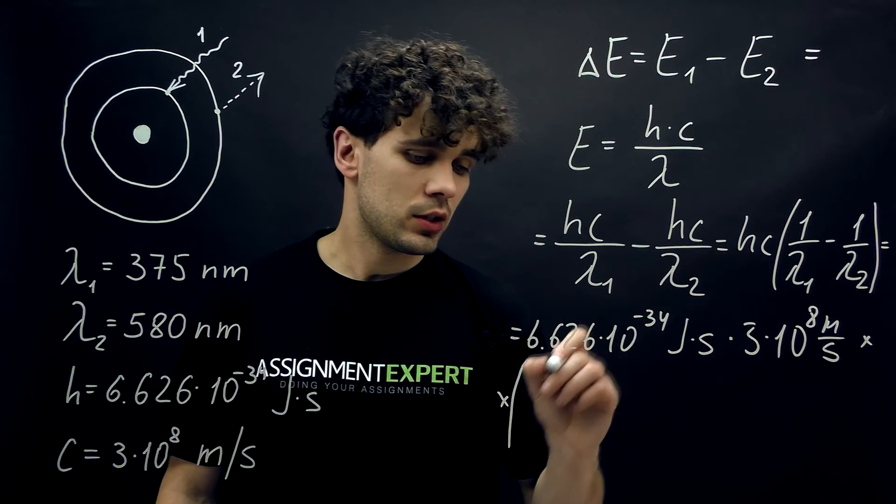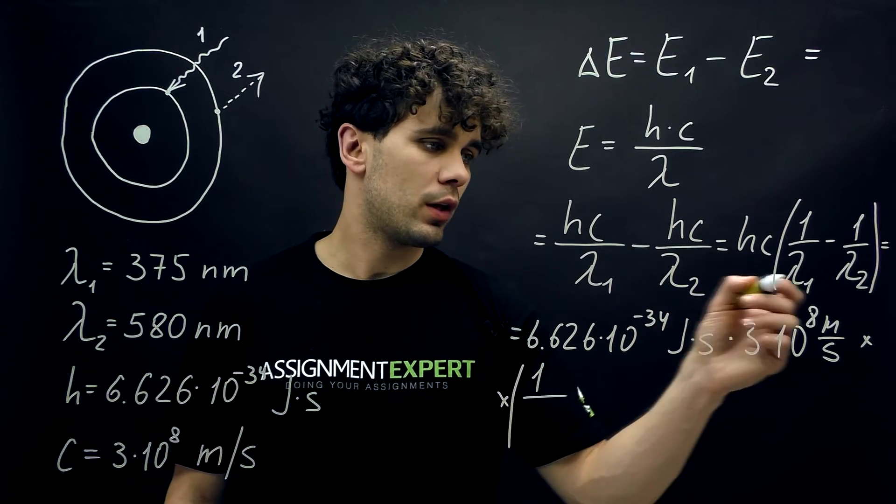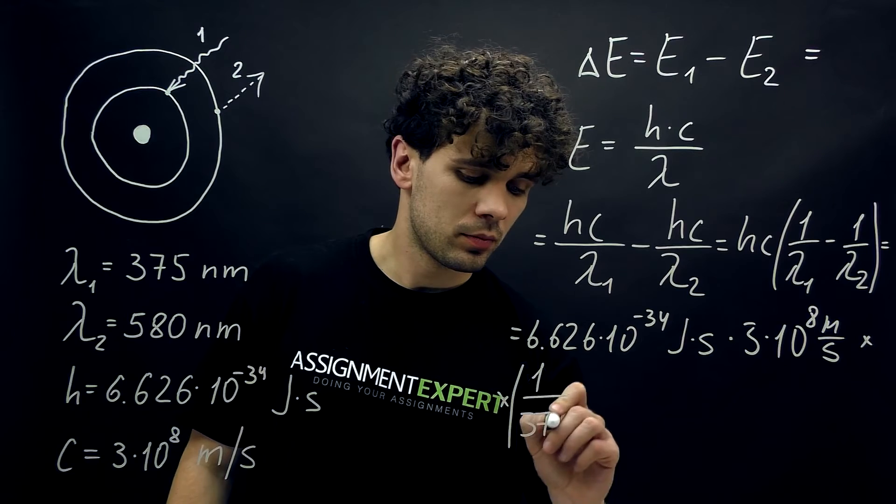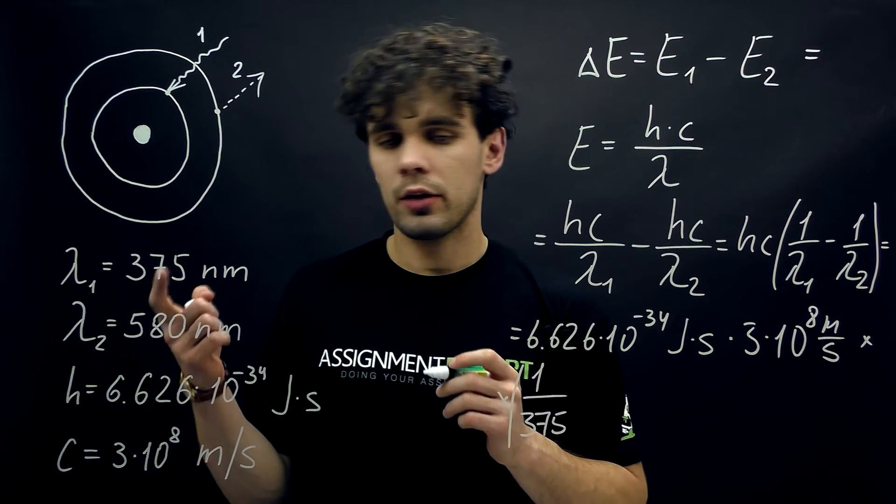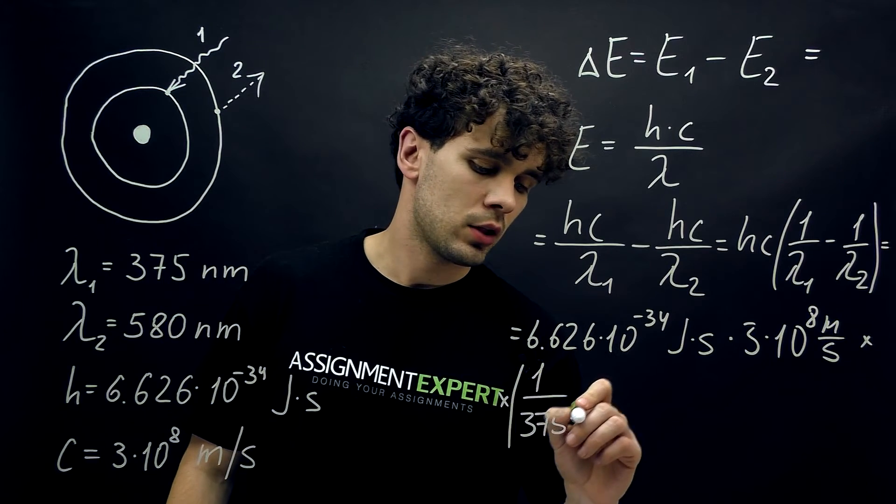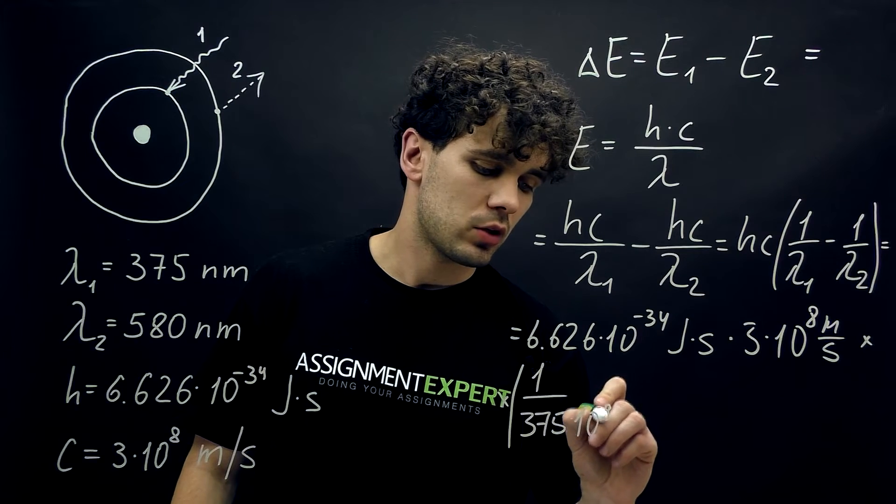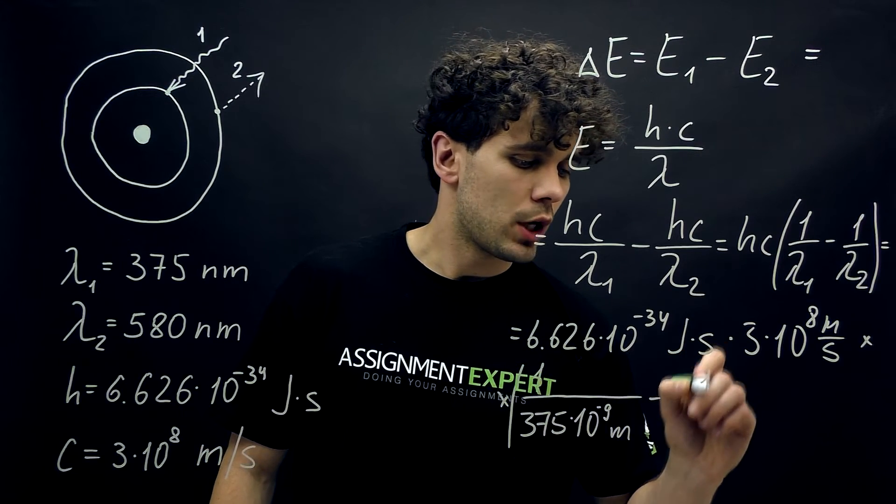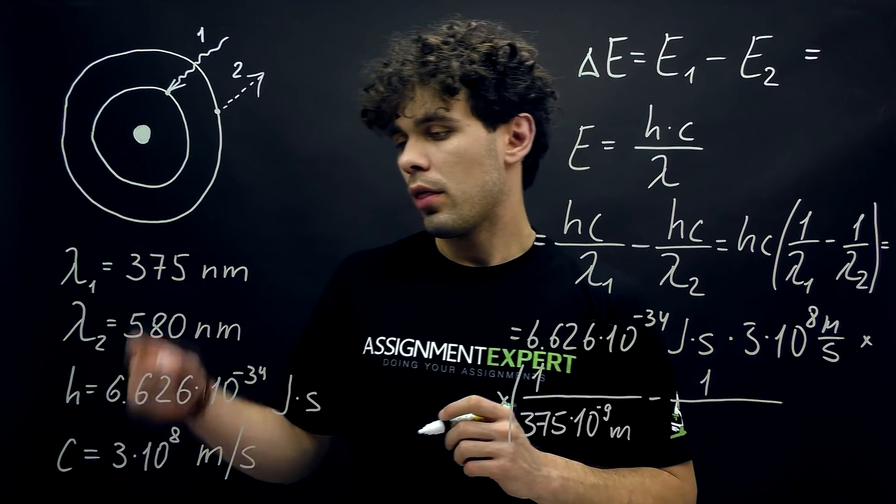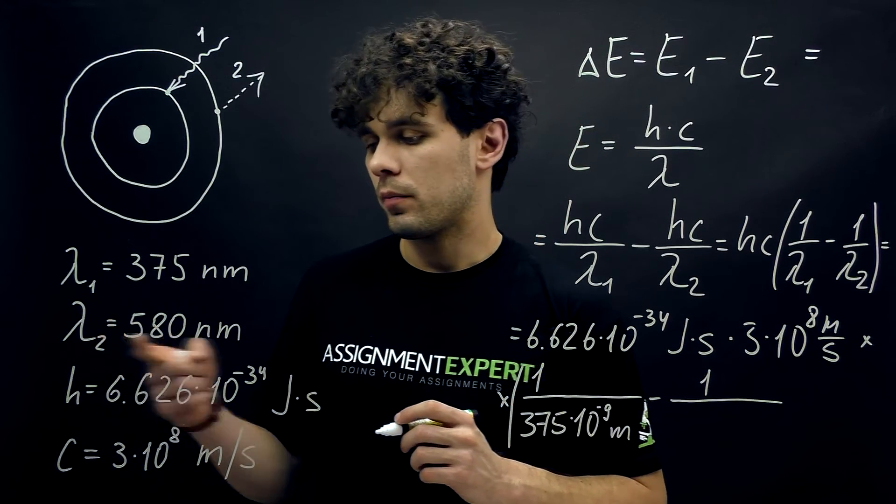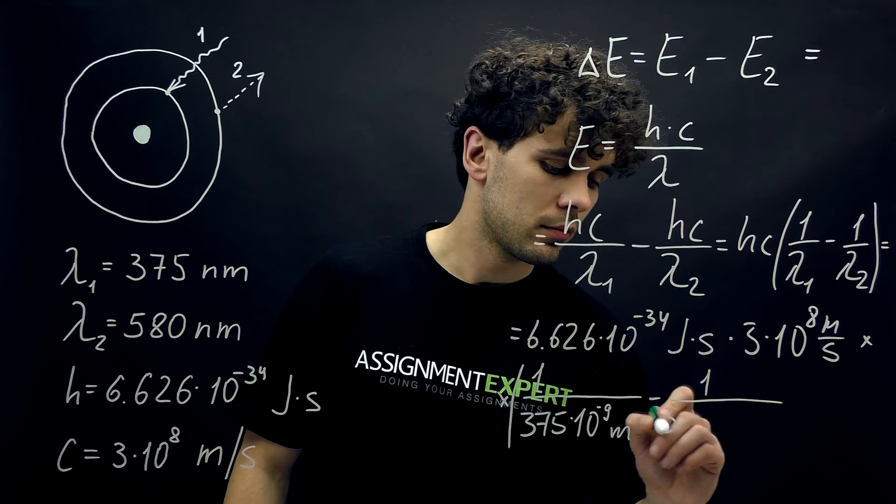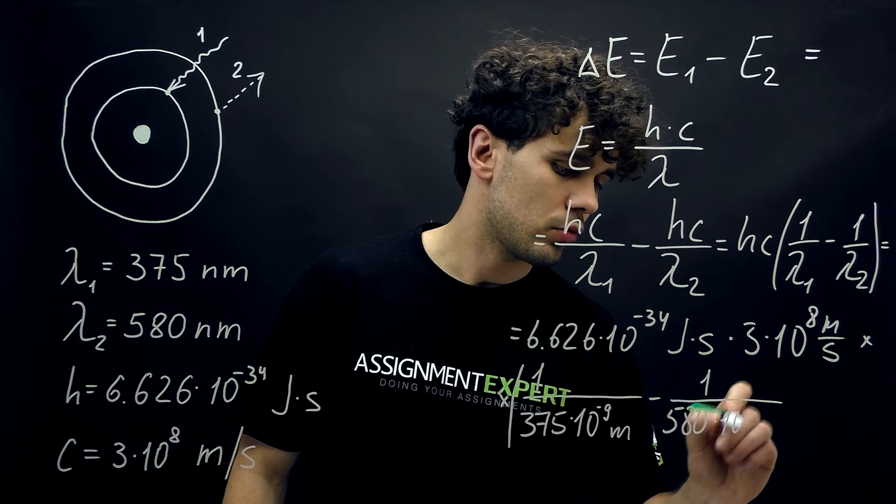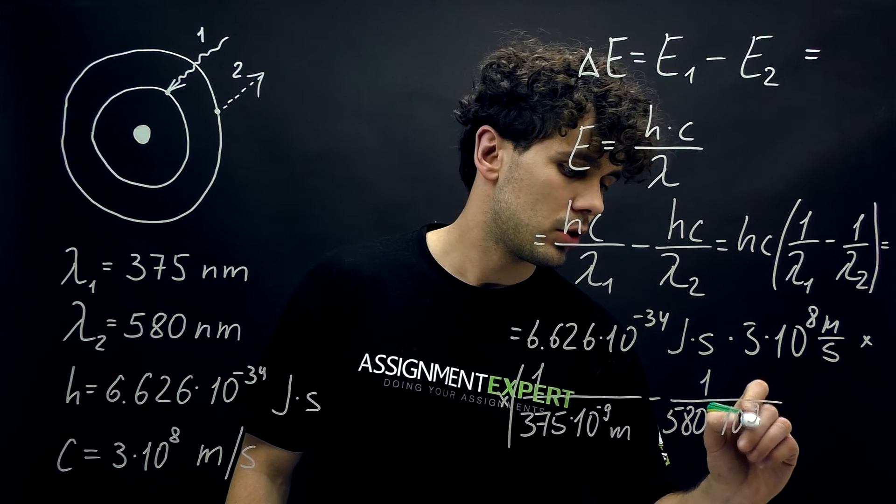And then we have the braces in which we have 1 over lambda 1, which is 375 nanometers. To turn nanometers to meters we need to add 10 to the negative 9th power, minus 1 over the wavelength of the second photon, 580 times 10 to the negative 9th meters.